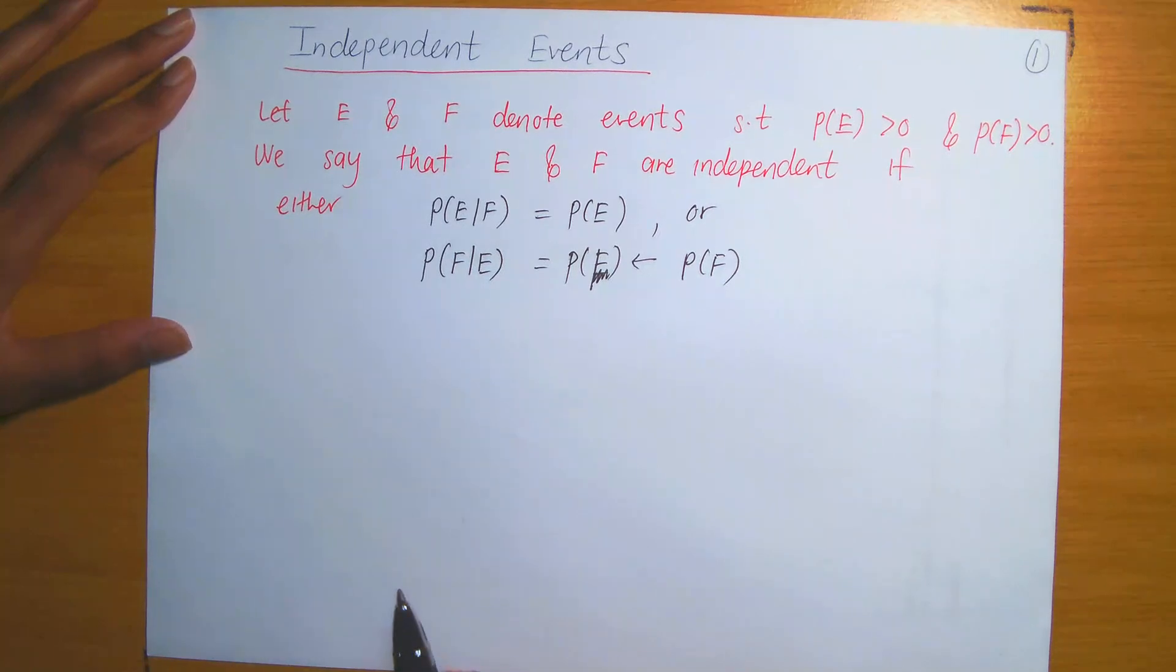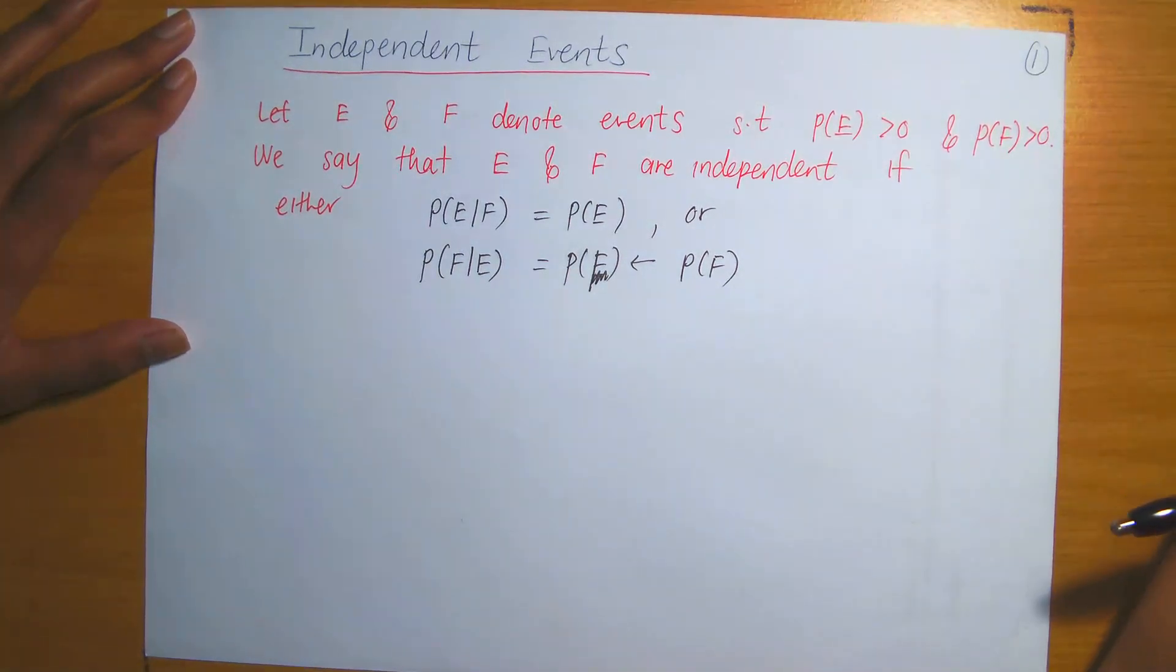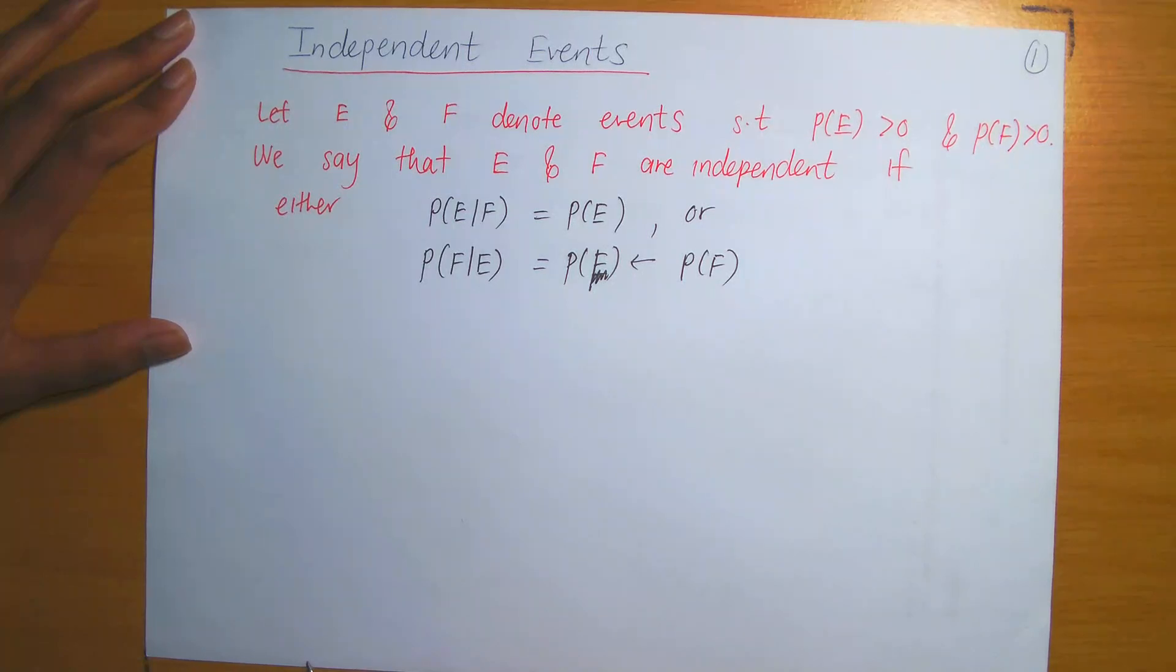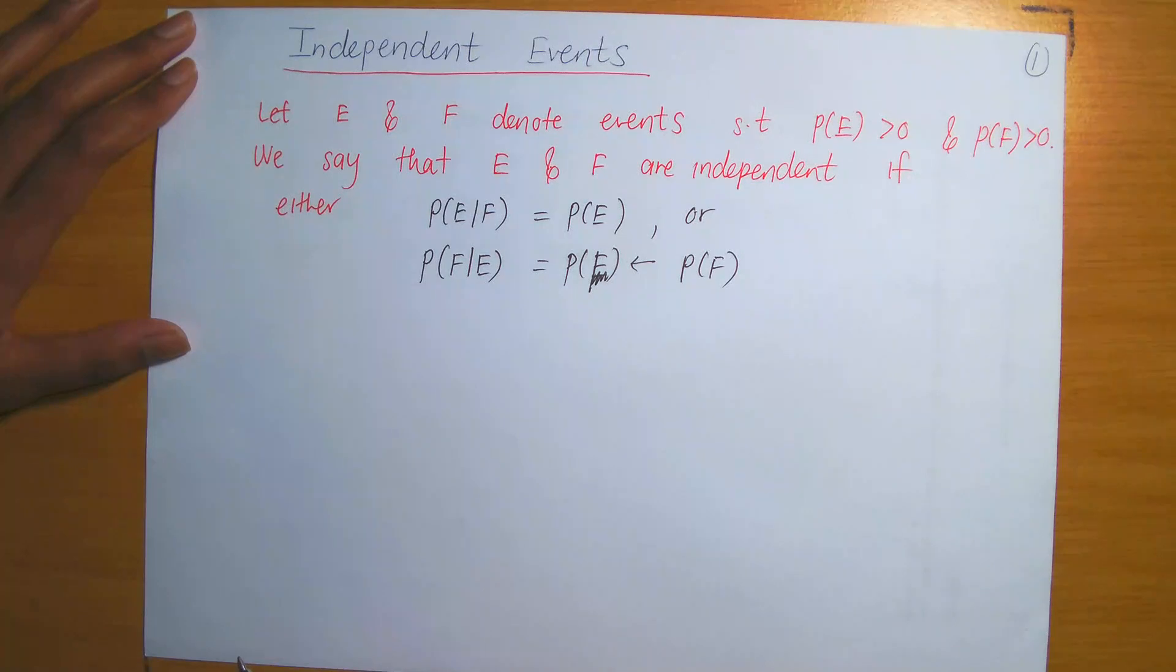An example of two events that are independent would be obtaining a head on a coin toss and then obtaining the number three on a roll of dice. Those two events are certainly independent. The probability of obtaining the head on the coin toss is independent and does not affect the probability of obtaining the number three on the roll of a dice.